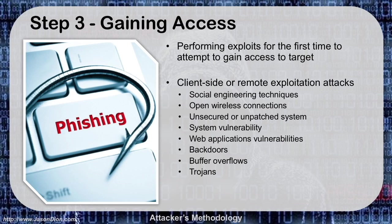Gaining access can involve techniques like social engineering or a spear phishing email. We can try going in through open wireless connections by doing wireless hacking. We can go in through an unpatched system and use a known vulnerability, like a Microsoft patch that hasn't been installed for Windows. We can also go in through system vulnerabilities, web applications, backdoors, buffer overflows, Trojans — the list goes on. There are a ton of different client-side and remote exploitation attacks. This is when we're actually reaching out and touching the network, trying to break in.